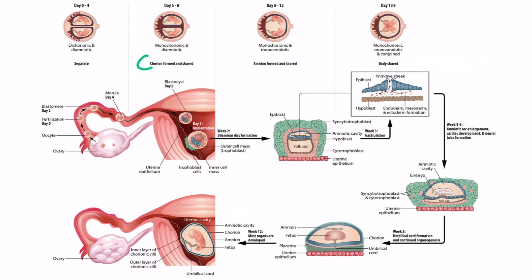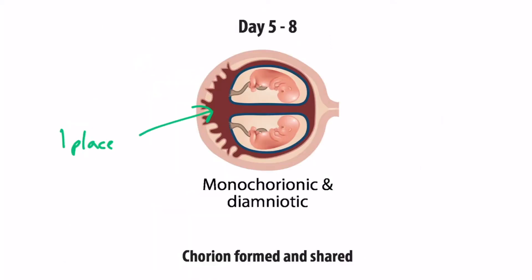Now let's look at the C stage, where the chorion is formed and will therefore be shared. This is the result if division occurs at the blastocyst stage, between days 5 and 8. At this stage, you can already see an inner cell mass (the blue cells) and the trophoblast, or outer cell mass. The trophoblast becomes the chorion or placenta, while the inner cell mass becomes the developing embryo. So when splitting occurs at the blastocyst stage, both embryos share the same chorion — making them monochorionic — but each still has its own amnion, so they are diamniotic.